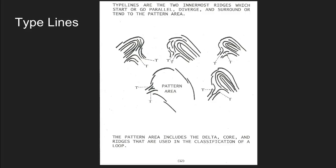In our last video we talked about recurving ridges and how it's important to identify a sufficient recurving ridge so that we can ultimately find the fingerprint core. In this short video we're going to talk about how to identify what are called type lines and how those type lines are going to help us find what's referred to as the fingerprint's delta.